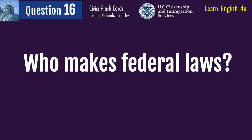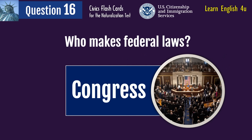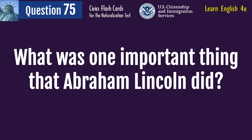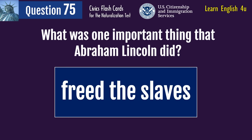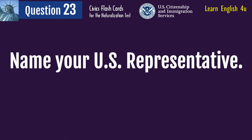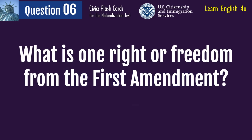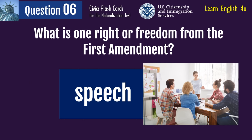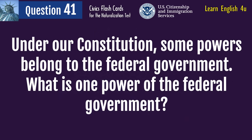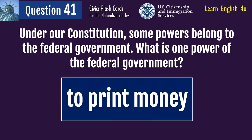Who makes federal laws? Congress. What was one important thing that Abraham Lincoln did? Freed the slaves. Name your U.S. representative. Answers will vary, please visit this website. What is one right or freedom from the First Amendment? Under our Constitution, some powers belong to the federal government. What is one power of the federal government? To print money.